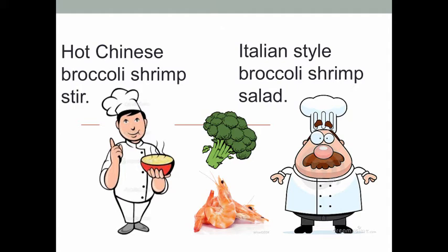I think there are two reasons. First of all, the menus in different chefs' minds are different. When the Chinese chef gets the raw material, he will think to cook a hot Chinese broccoli shrimp stir-fry. The American chef will use the same raw materials to cook an Italian-style broccoli shrimp salad. It's just like in the business world — when different leaders face the same market, they will choose different strategies. One could be the cost leader, another the differentiation leader, even in the same industry.